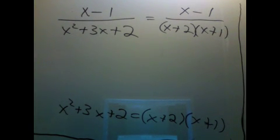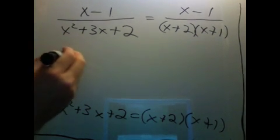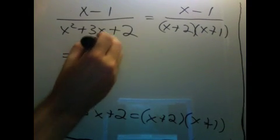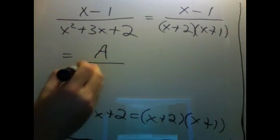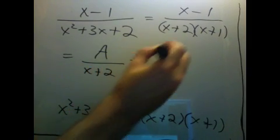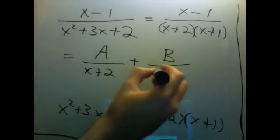And now what we're going to do is sort of strange. We're going to guess that this can be written in a really nice way. We're going to guess that we can write it as a number over the first factor plus a number over the second factor.